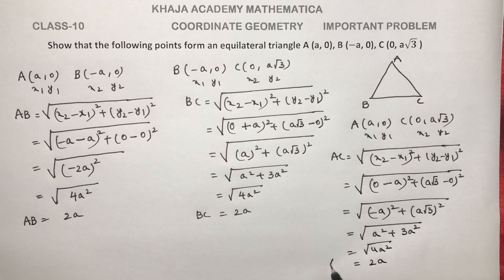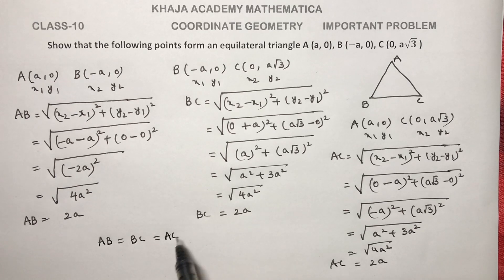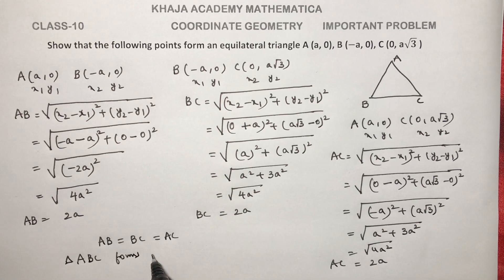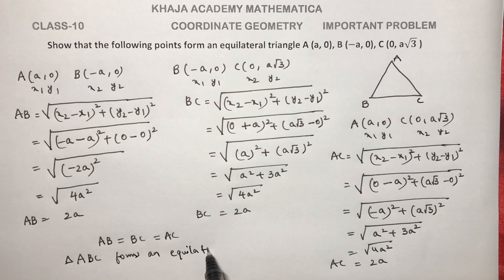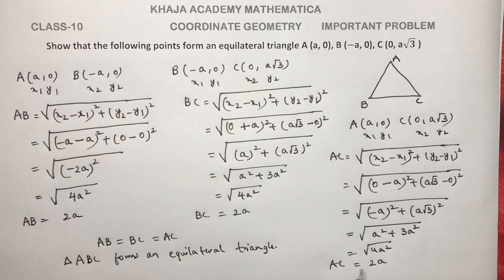So AC distance is also 2a units. Therefore, AB distance equals BC distance equals AC distance equals 2a. Therefore, ABC forms an equilateral triangle. To summarize: find the distances and ensure all three are equal — if all sides are equal, it is an equilateral triangle. Thanks for watching, please subscribe to my channel.